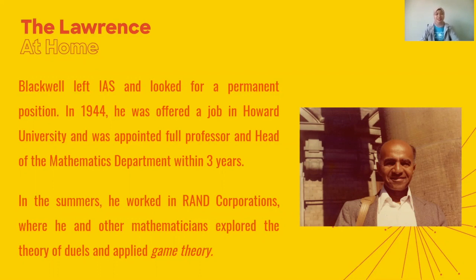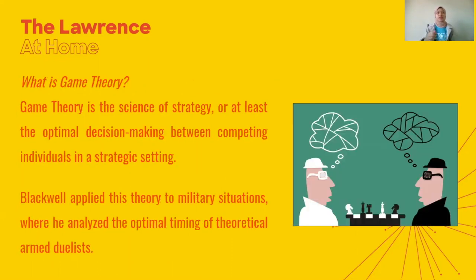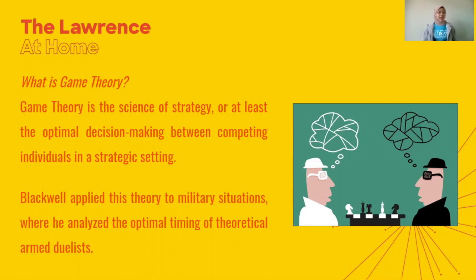Game theory sounds really interesting — so what exactly is it? Game theory is the science of strategy, or more precisely, the study of optimal decision-making between competing individuals in a strategic setting. Pretty much, game theory studies how people make decisions. For example, if there are two or more people in a situation with a winner and a loser — like in a game — this theory studies the strategies people will take to get the best outcomes.